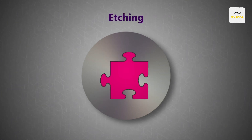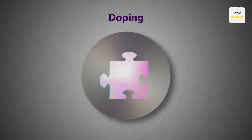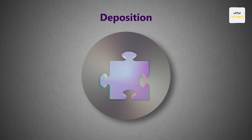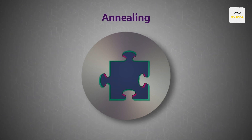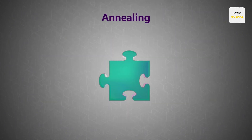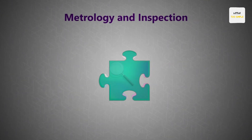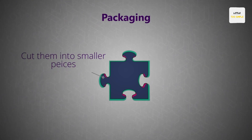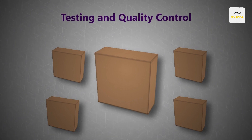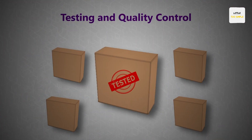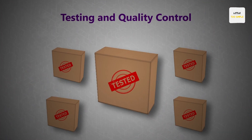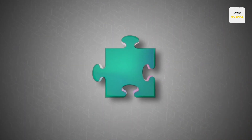For etching, we use a special tool to remove the extra parts from the picture, making the puzzle pieces visible. For doping, we sprinkle magic dust in some areas to make them do special things. For deposition, we add thin layers of special materials on top to help the puzzle pieces work together. Annealing uses a secret oven to heat the puzzle gently so it becomes strong. Chemical-mechanical polishing gently rubs the surface smooth. Metrology and inspection checks that everything is in the right place and fixes anything wrong. Finally, packaging carefully cuts the big puzzle into smaller pieces, each placed in its own special box. Testing and quality control ensures all pieces work perfectly before delivery. And there we have it — our tiny magical puzzle is ready to power our cool electronic toy.